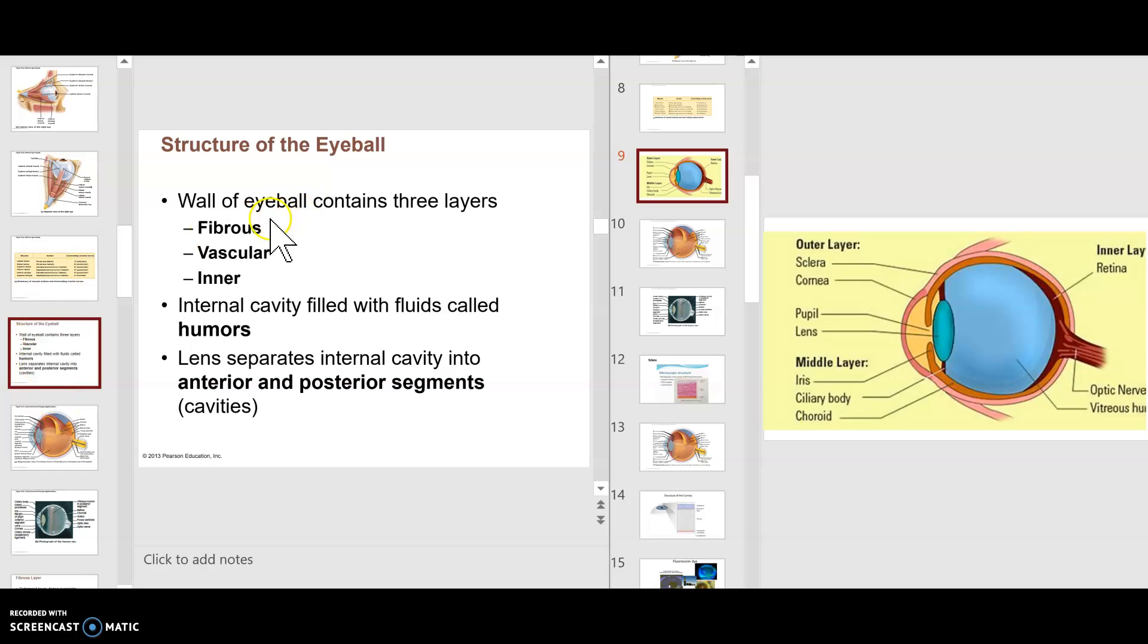There are actually three layers of the eyeball. The outer fibrous layer, a middle vascular layer, and an inner layer, which is where the retina would be.